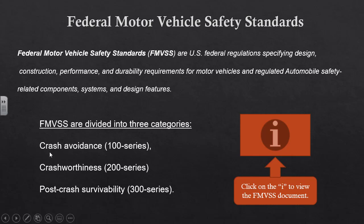FMVSS standards are divided into three categories: the 100 series covers crash avoidance, the 200 series covers crash worthiness, and the 300 series covers post-crash survivability. Take a few moments, click on the info link in your PowerPoint, and skim through the Federal Motor Vehicle Standards document — just click around each series to see what technical data and items are regulated on an automobile. When you're done, come back to this recorded lecture and hit play.